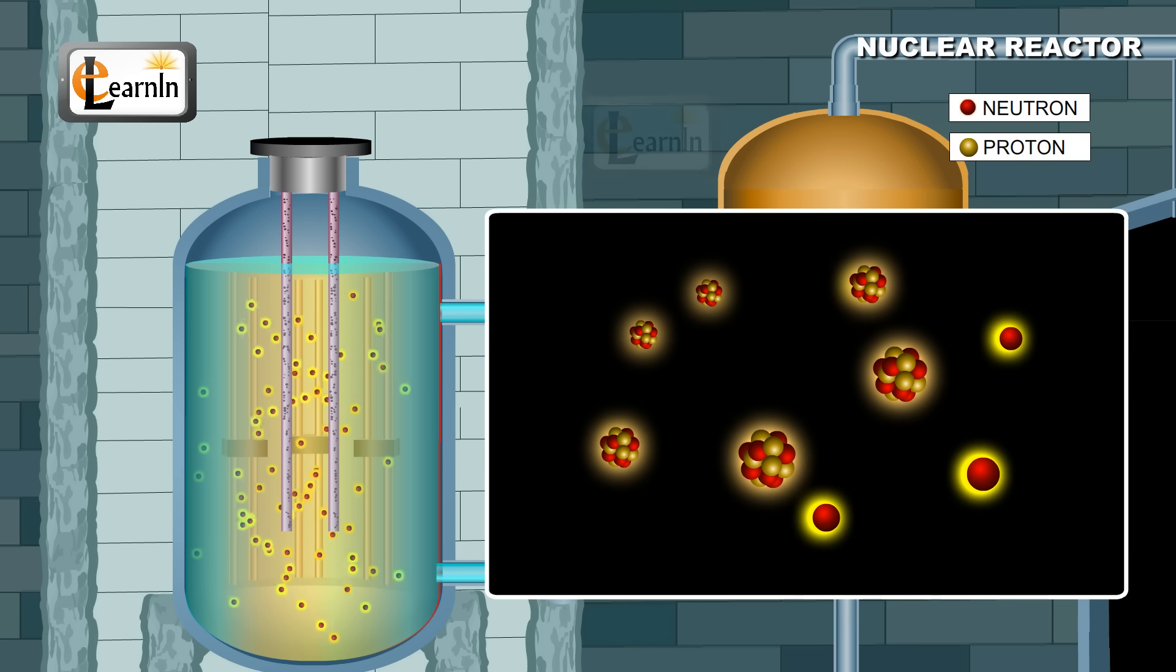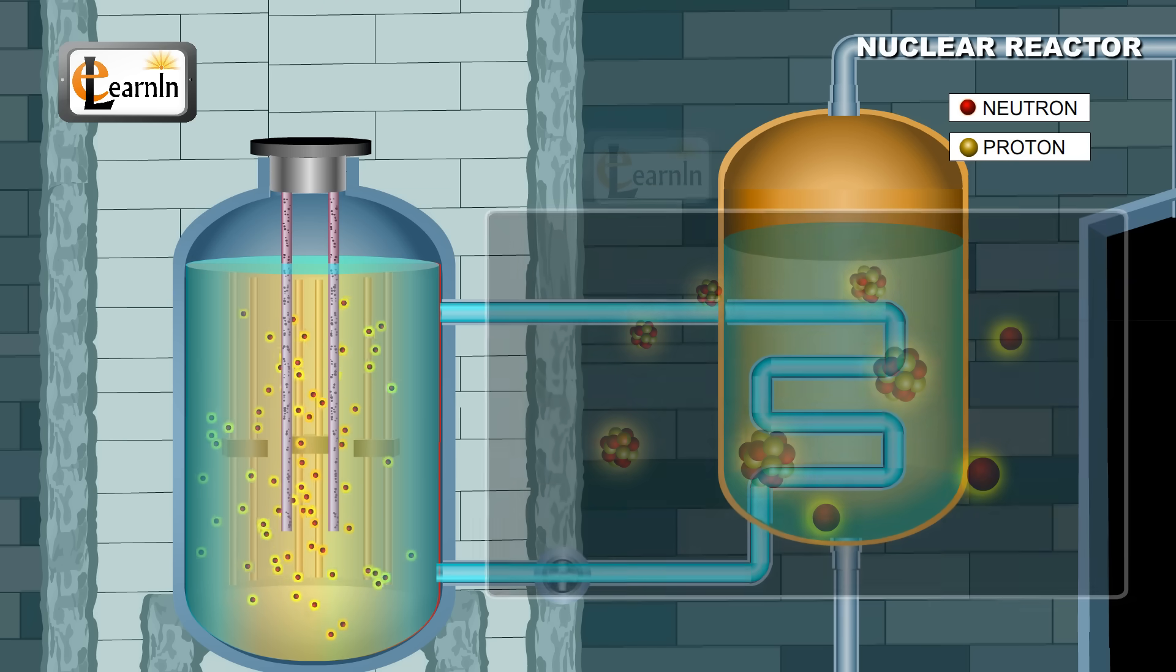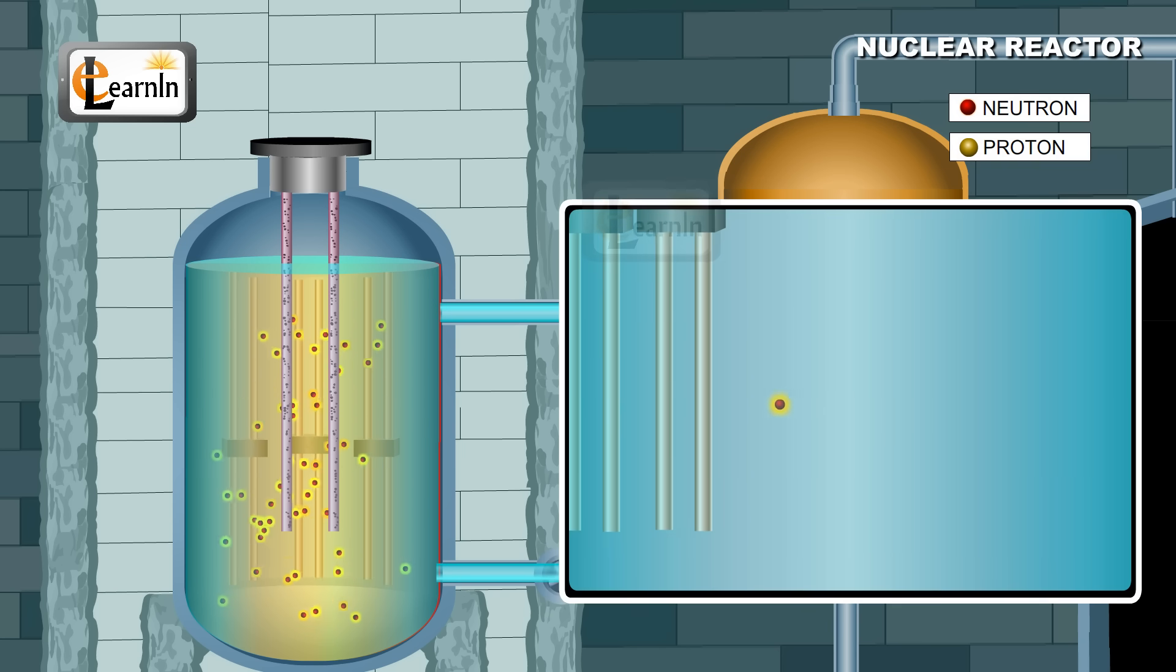In fact, the probability of these neutrons producing another fission reaction is 500 times less than that compared to a thermal neutron. This is where a moderator is extremely useful. Moderators have the capability to slow down or moderate the speeds of these high energy neutrons so that they can in turn be used for a chain reaction to trigger multiple fission reactions of other uranium-235 nuclei.